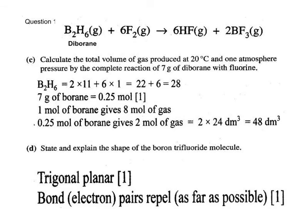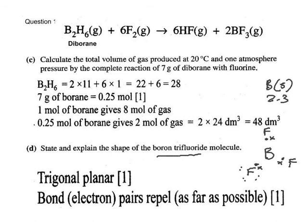Boron trifluoride BF3: boron has atomic number 5, configuration 2,3. In its valence shell it has only 3 electrons. It bonds with 3 fluorines. The boron has an incomplete octet — only 6 electrons, 3 bonding pairs. These mutually repel one another, and the best shape to get them as far apart as possible is a flat, planar shape known as trigonal planar. This explains the shape: repulsions of electron pairs cause them to go as far away as possible.